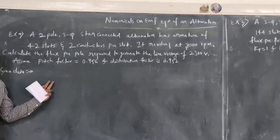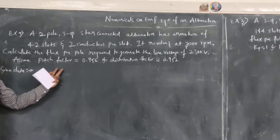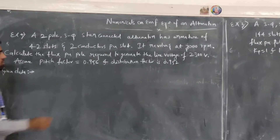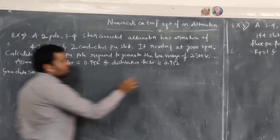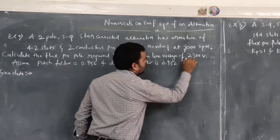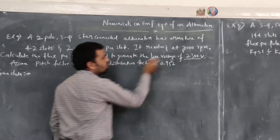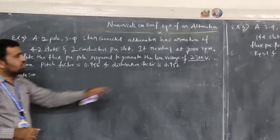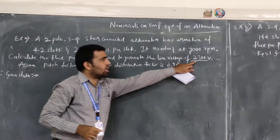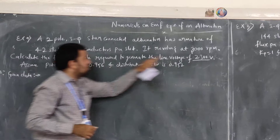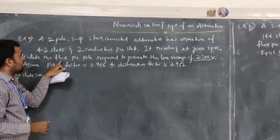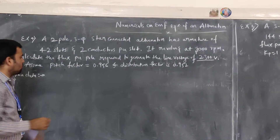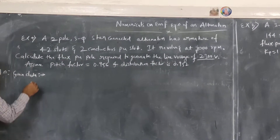We have already solved two problems on the EMF equation. The only difference is that in the previous problem we needed to calculate the line voltage, but in this question the line voltage is already given, so we need to calculate the flux per pole. First, I will write out the given data.